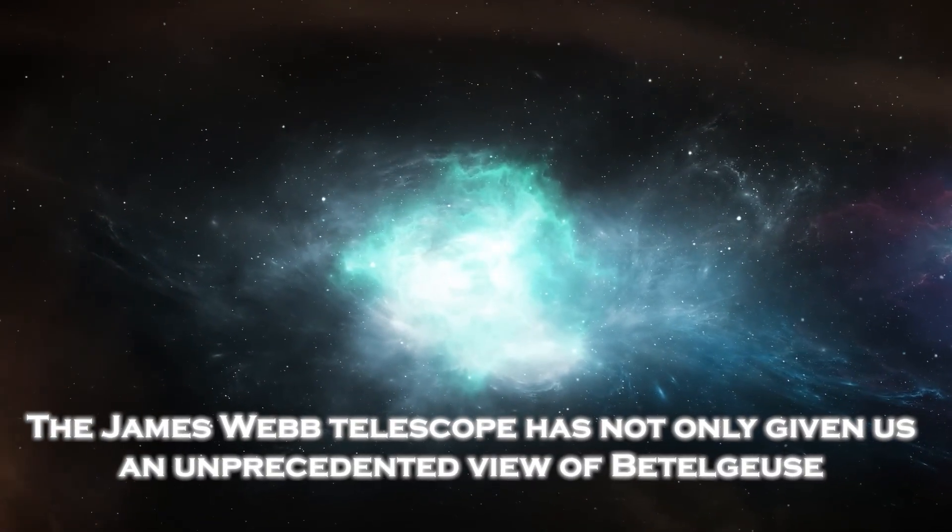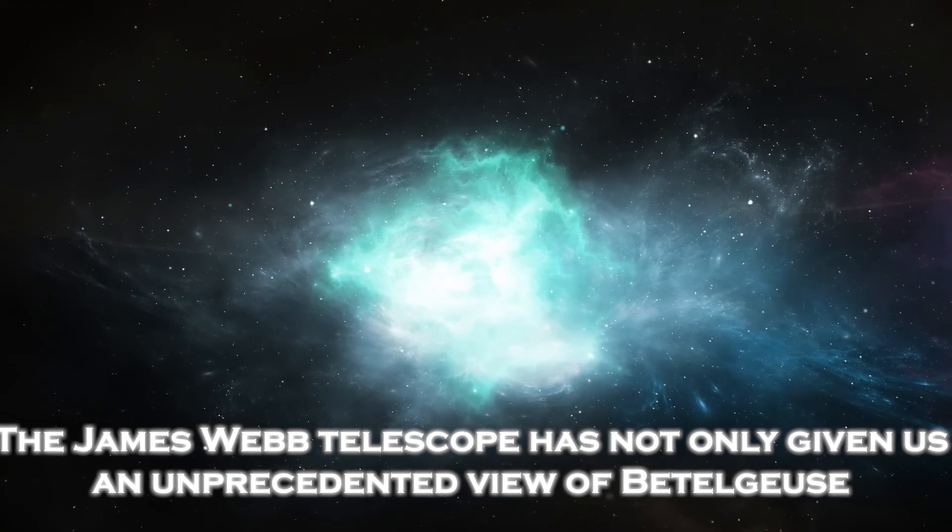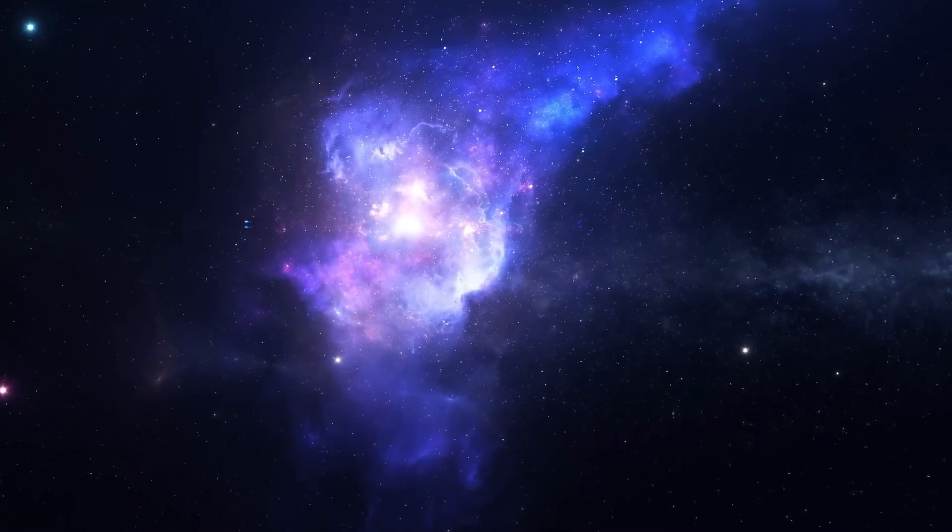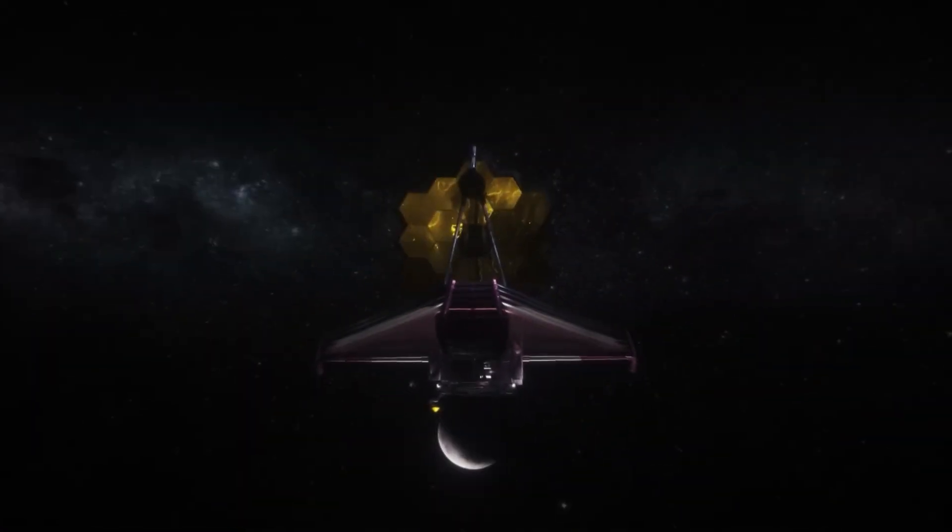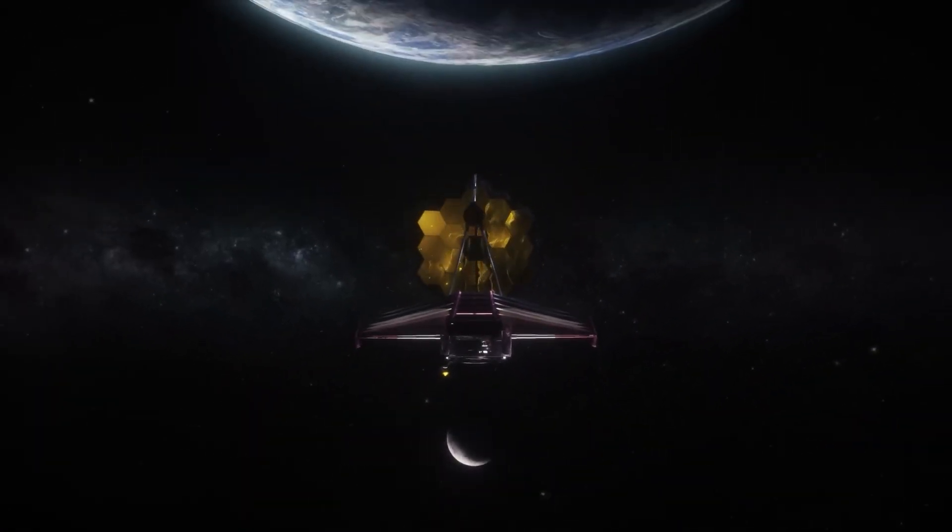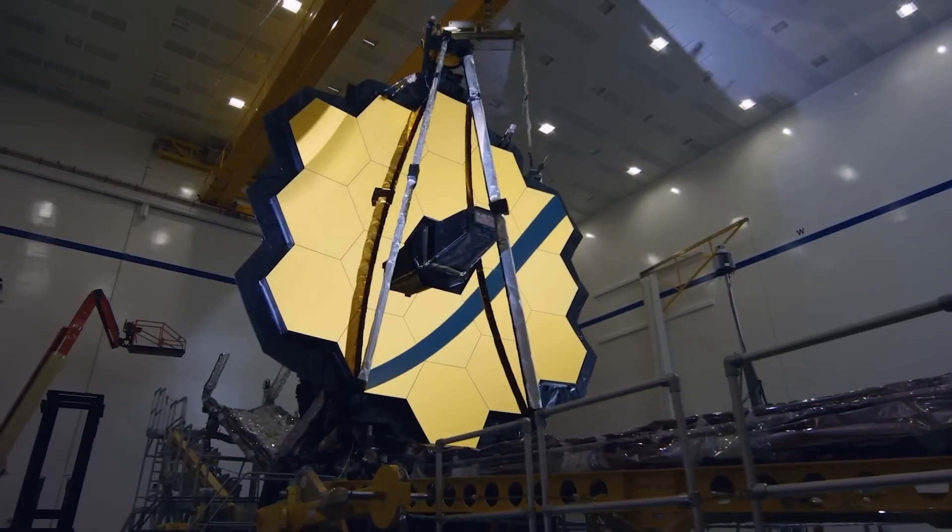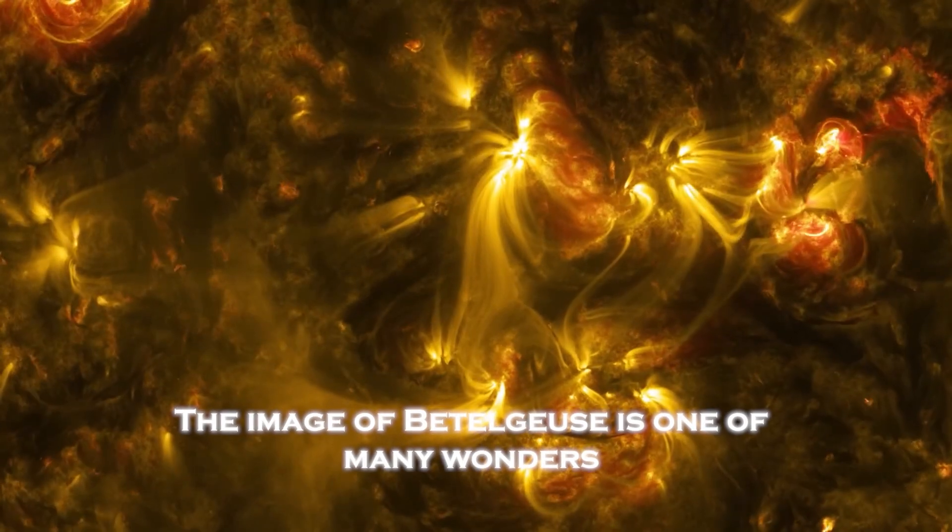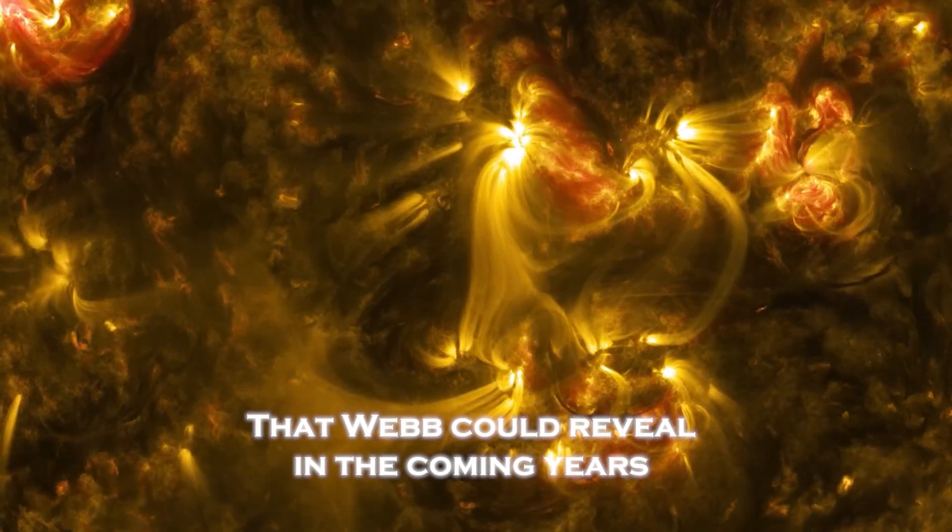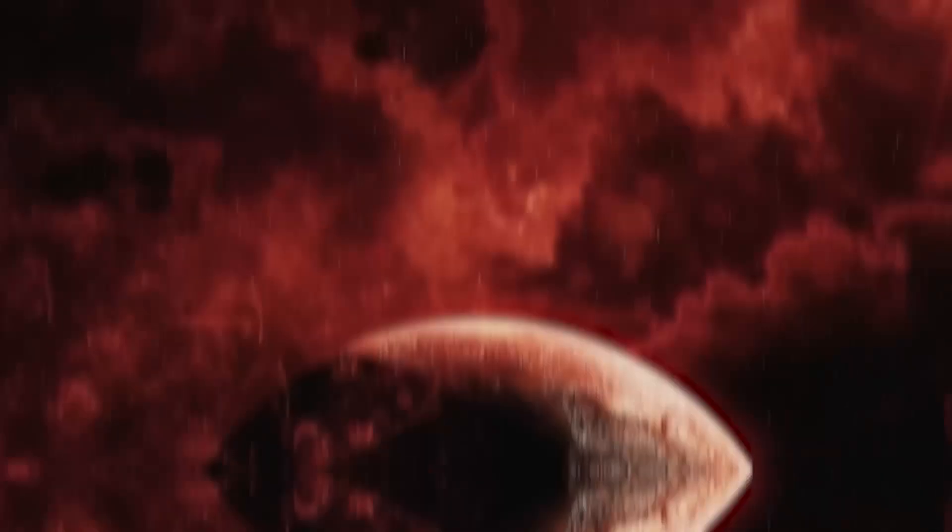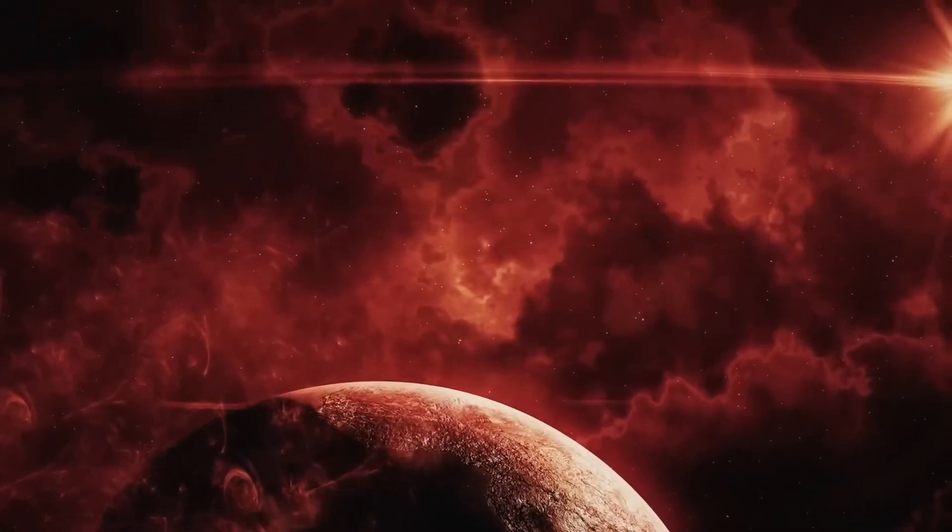The James Webb telescope has not only given us an unprecedented view of Betelgeuse, its mission is just beginning. From distant galaxies to potentially habitable planets, the James Webb is designed to look farther than we have ever reached. What it has captured so far is just the beginning of a revolution in astronomy. The image of Betelgeuse is one of many wonders that Webb could reveal in the coming years. From star formation to the search for life, each observation represents an opportunity to unlock the deepest secrets of the universe.